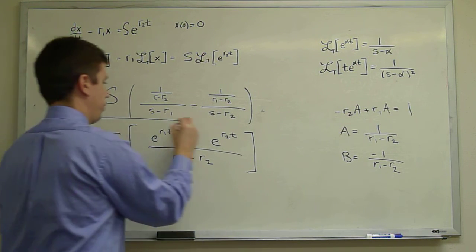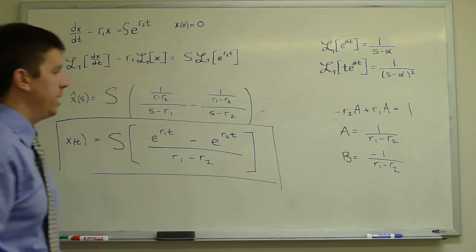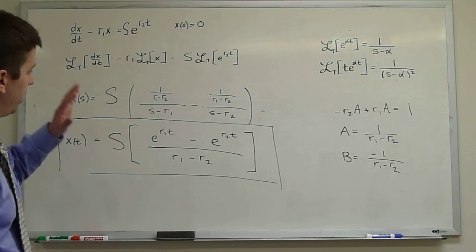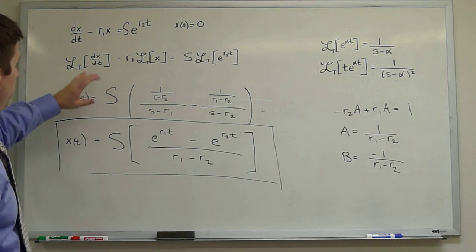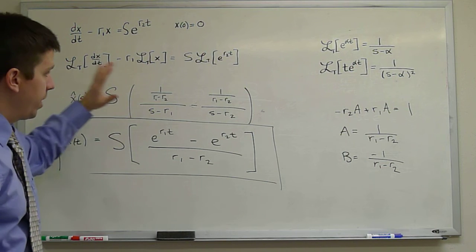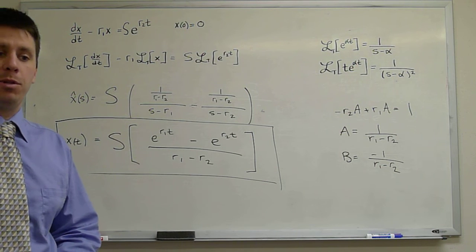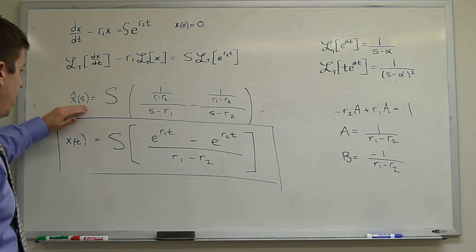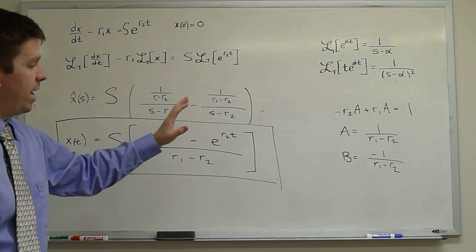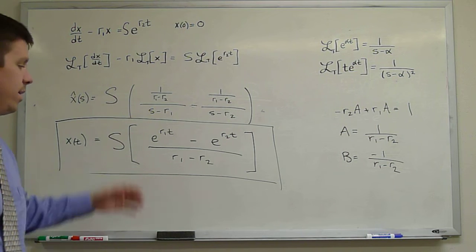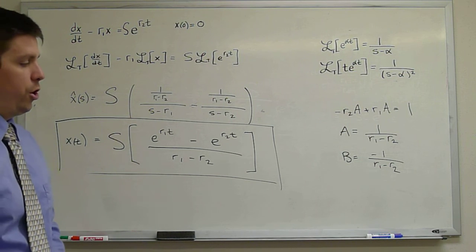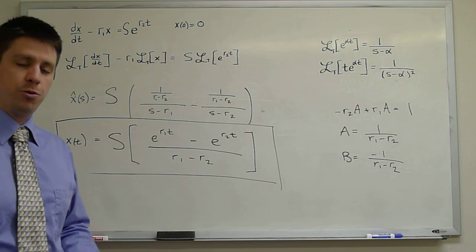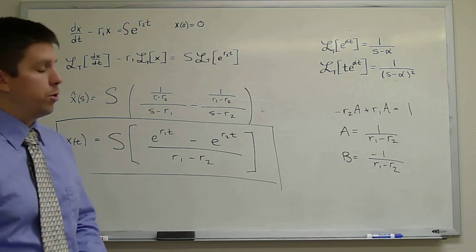This is a solution we've seen for this problem in many other forms. It required some partial fractions in the middle, but everything else was pretty straightforward: take the Laplace transform, get an algebraic equation for x̂(S), that's just algebra, break that algebraic solution into simple pieces, and then invert. It's switching to a better space for solving these problems where differentiation reduces to multiplication.